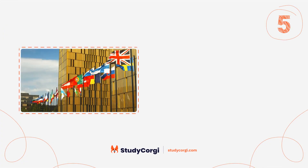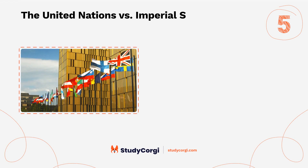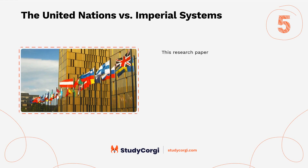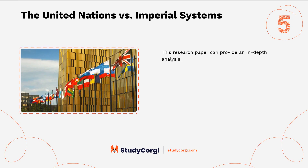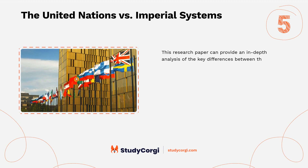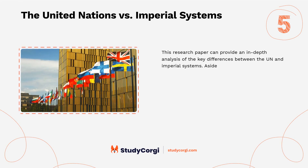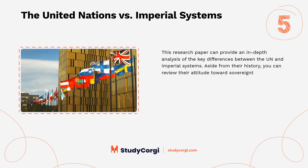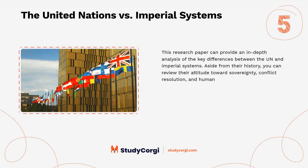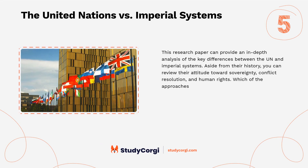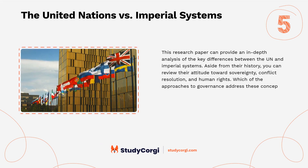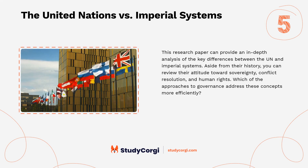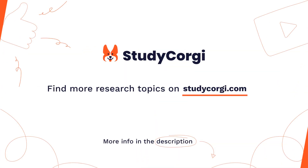The United Nations versus imperial systems: this research paper can provide an in-depth analysis of the key differences between the UN and imperial systems. Aside from their history, you can review their attitude towards sovereignty, conflict resolution, and human rights. Consider which of the approaches to governance addresses these concepts more efficiently. Find more research topics on StudyCorgi.com.